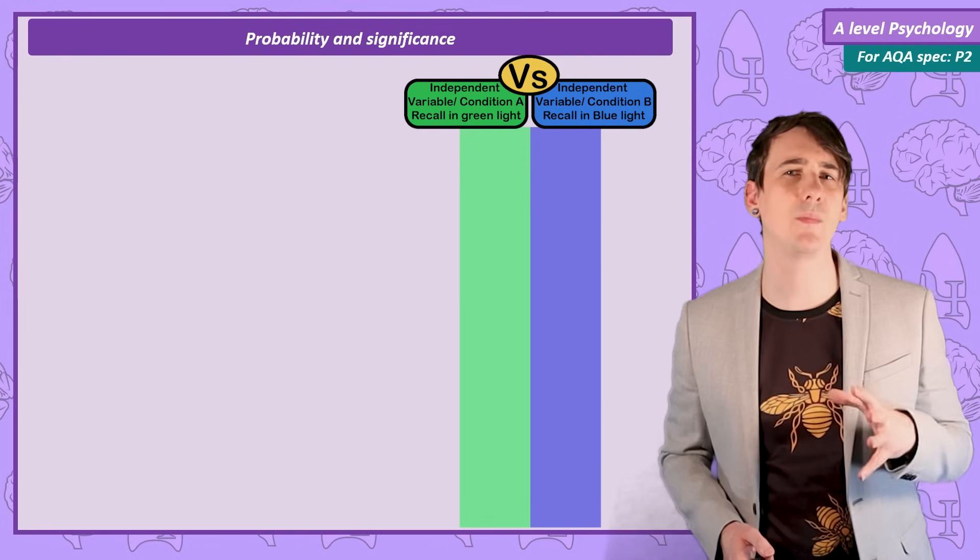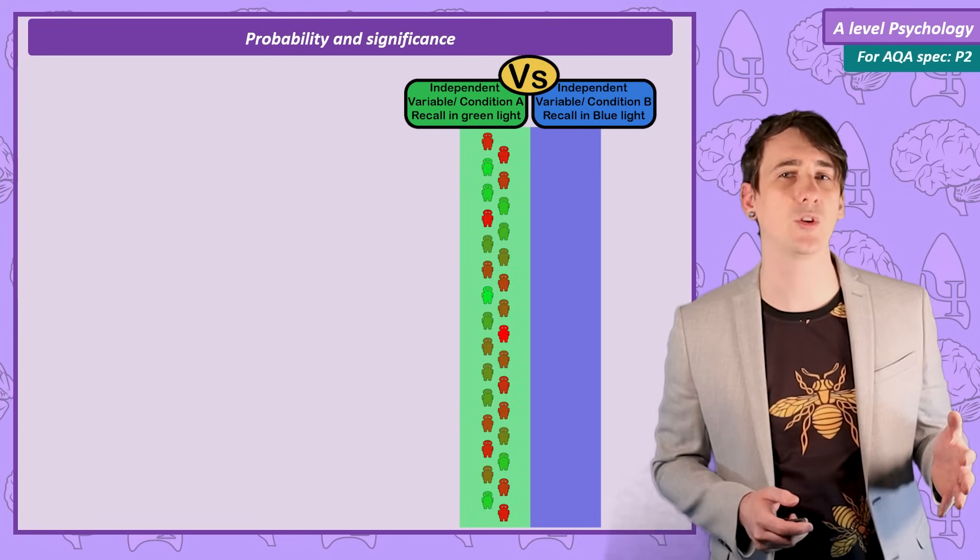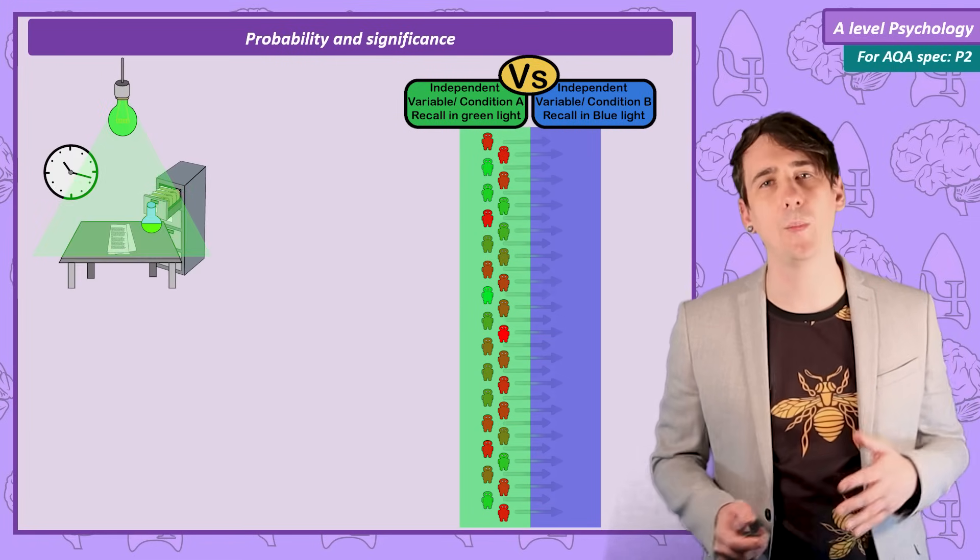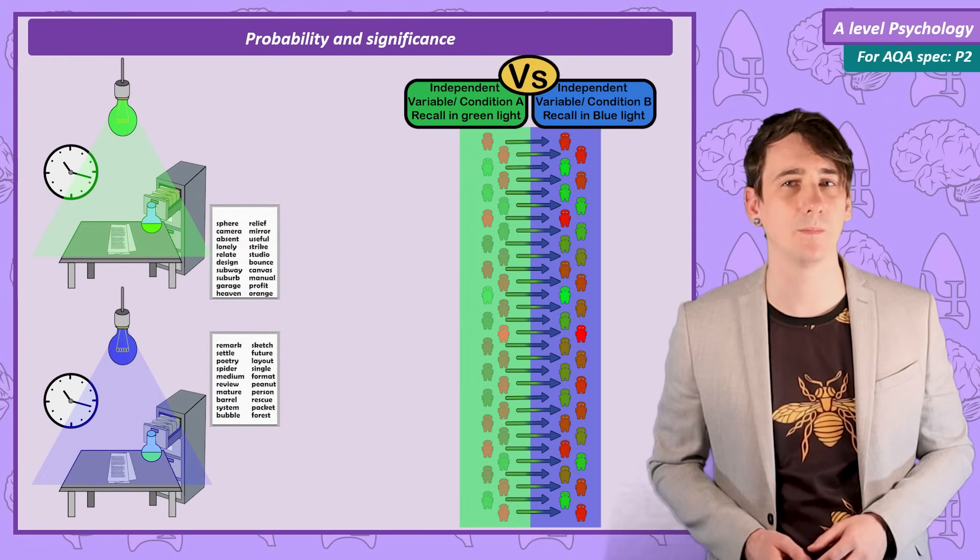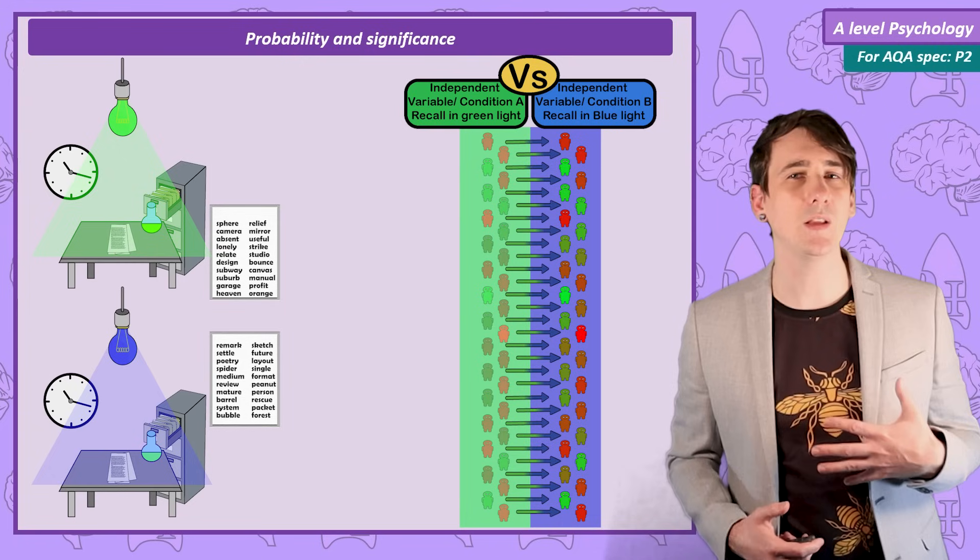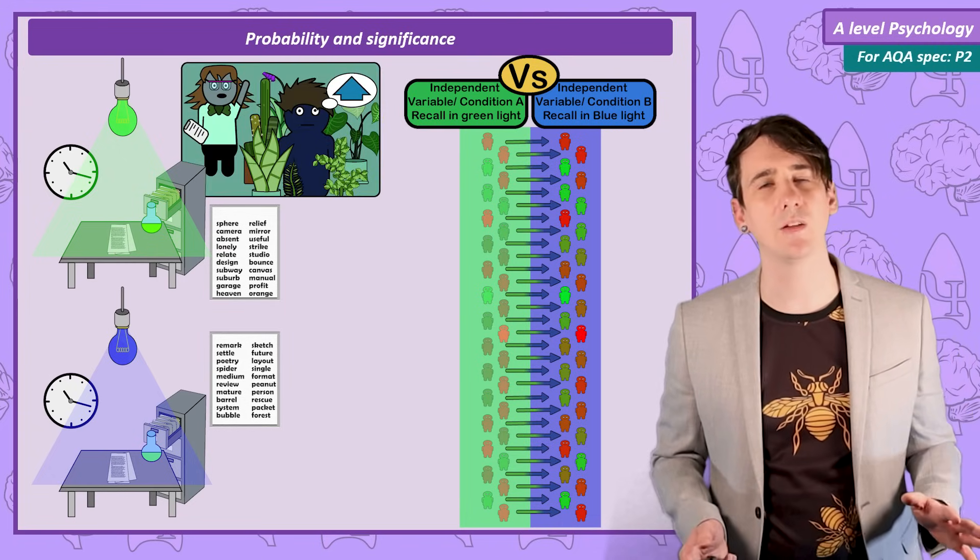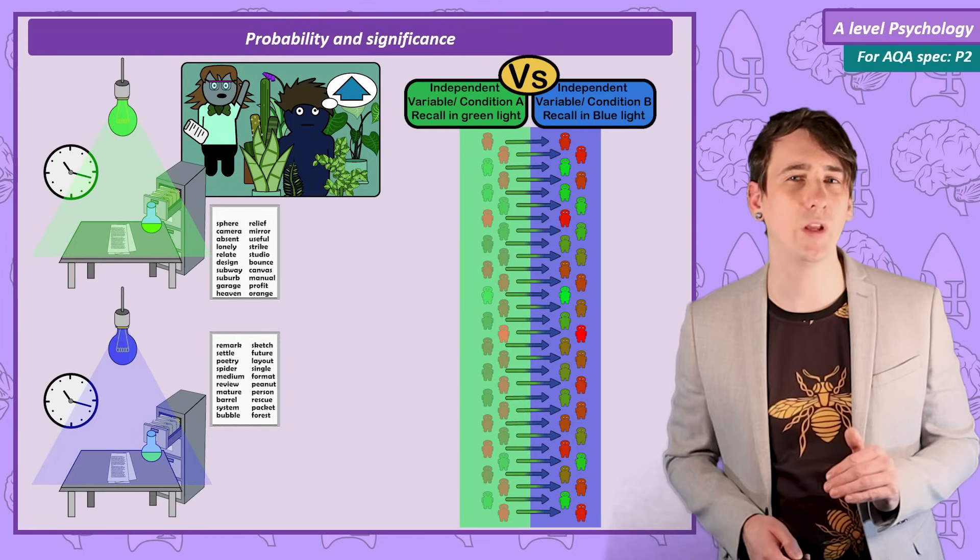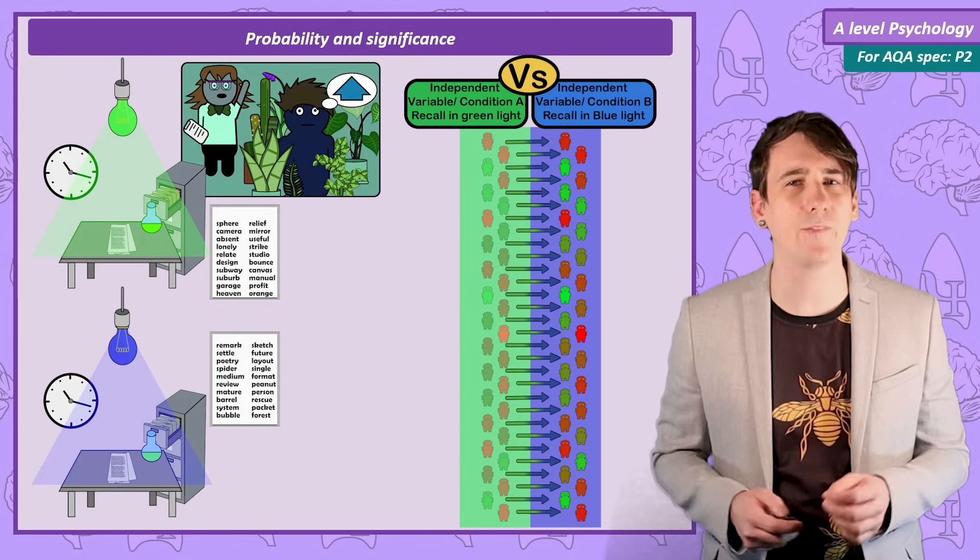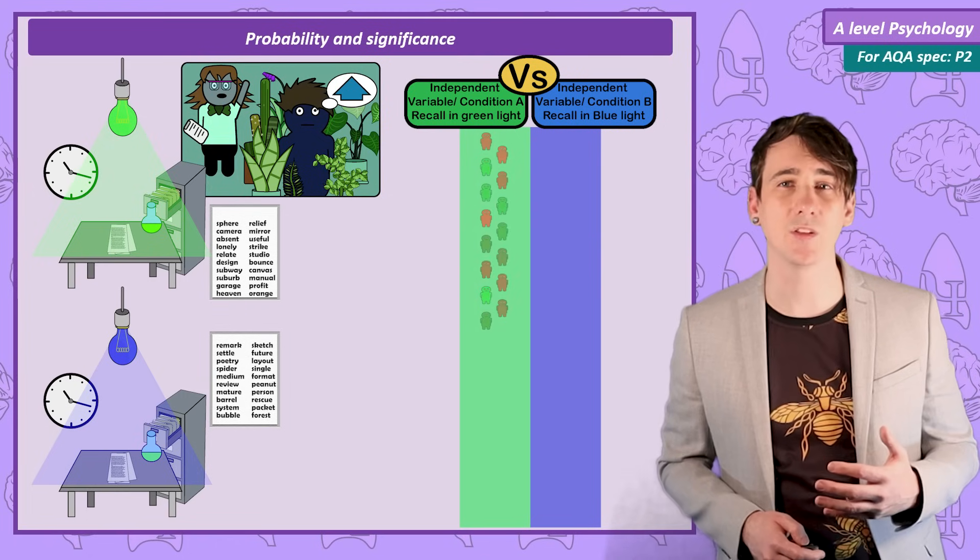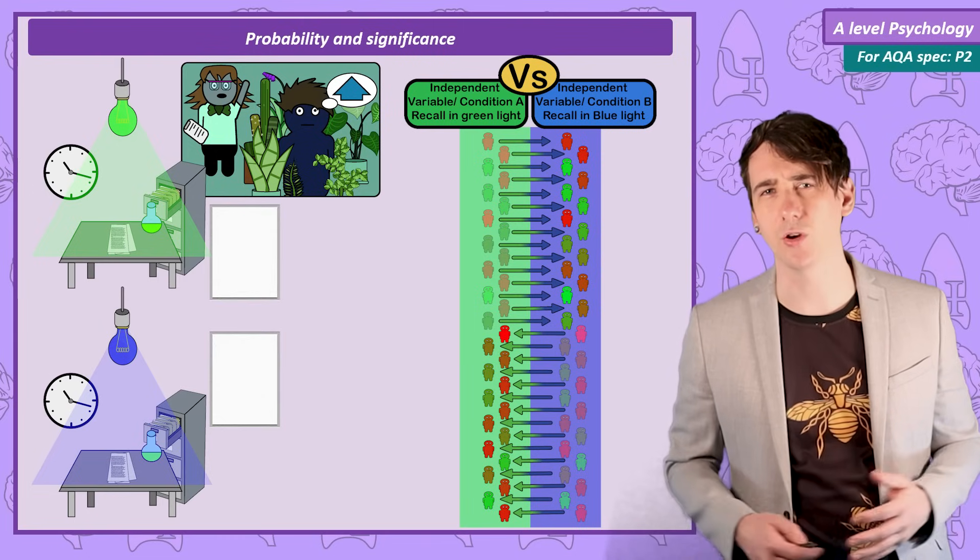To see what I mean, let's imagine I conduct a repeated measures design. My independent variable is if the participants recall in the room lit by green or blue light. The dependent variable is the number of words recalled from a list of 20 words. According to my theory, based on some previous research showing the positive influence of green plants in aiding recall, I am going to give a directional hypothesis that recall will be better in the green light condition. We are going to conduct our study as carefully as possible, I will counterbalance by making half the participants recalling green light first and blue light second. This should control for order effects.